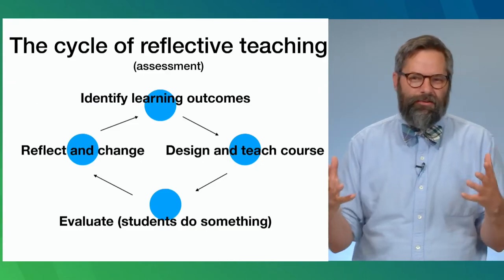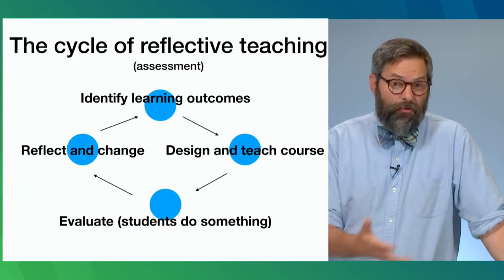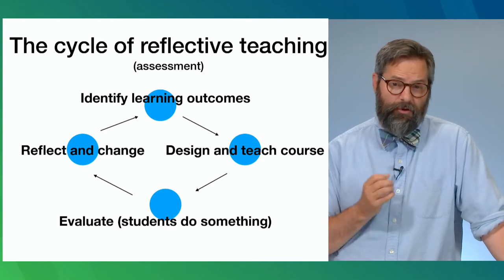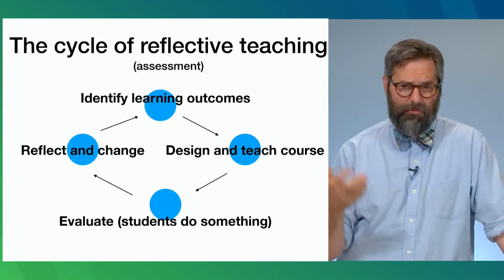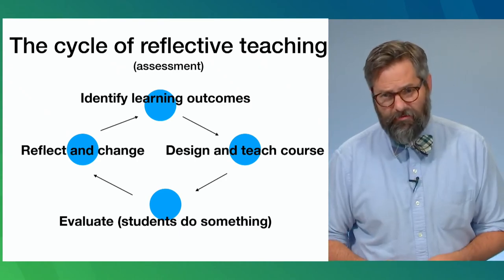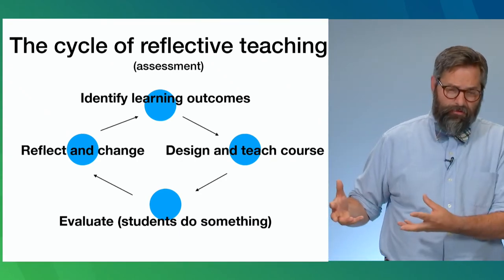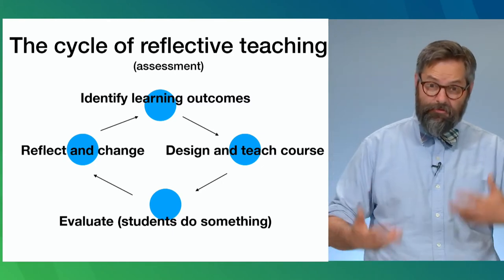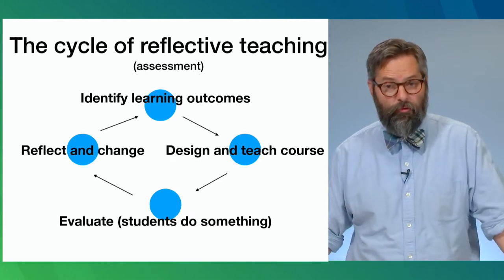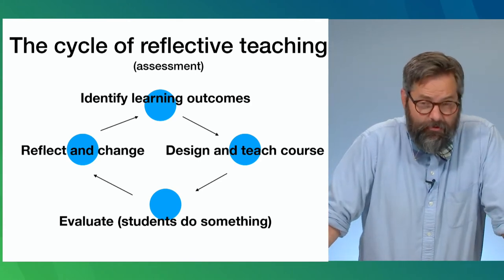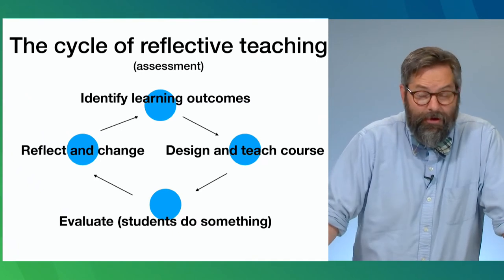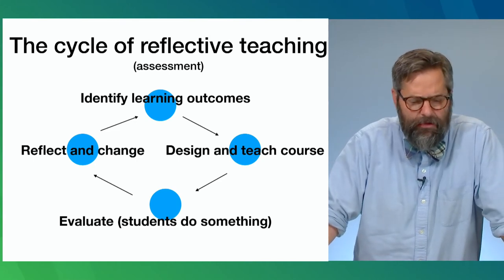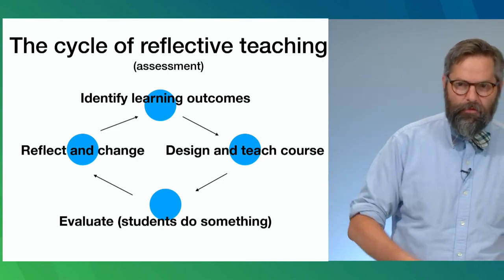Here's something of what it looks like, and we all do this. We start off by identifying some learning outcomes for our courses — what is it that I want my students to know, understand, and be able to do when they complete my Intro to Philosophy class? Then we design our courses with those goals in mind, teach the course, ask students to do some things, and evaluate their performance. At the end of the semester, responsible teachers reflect on what happened and try to use that to inform the whole process again.